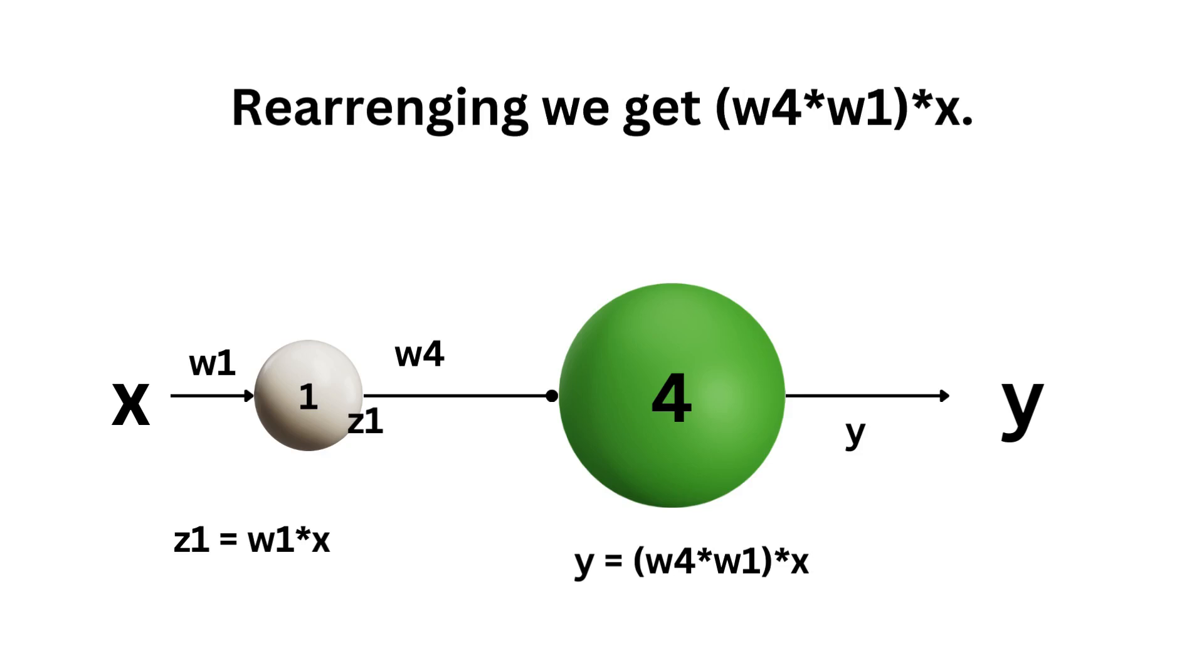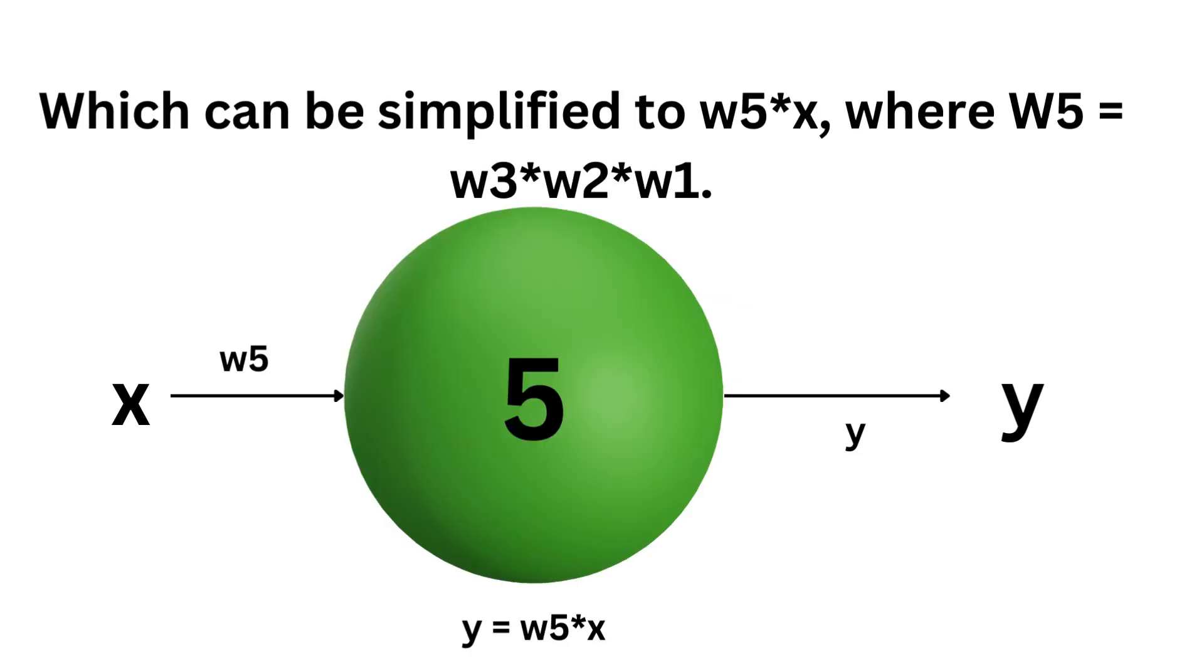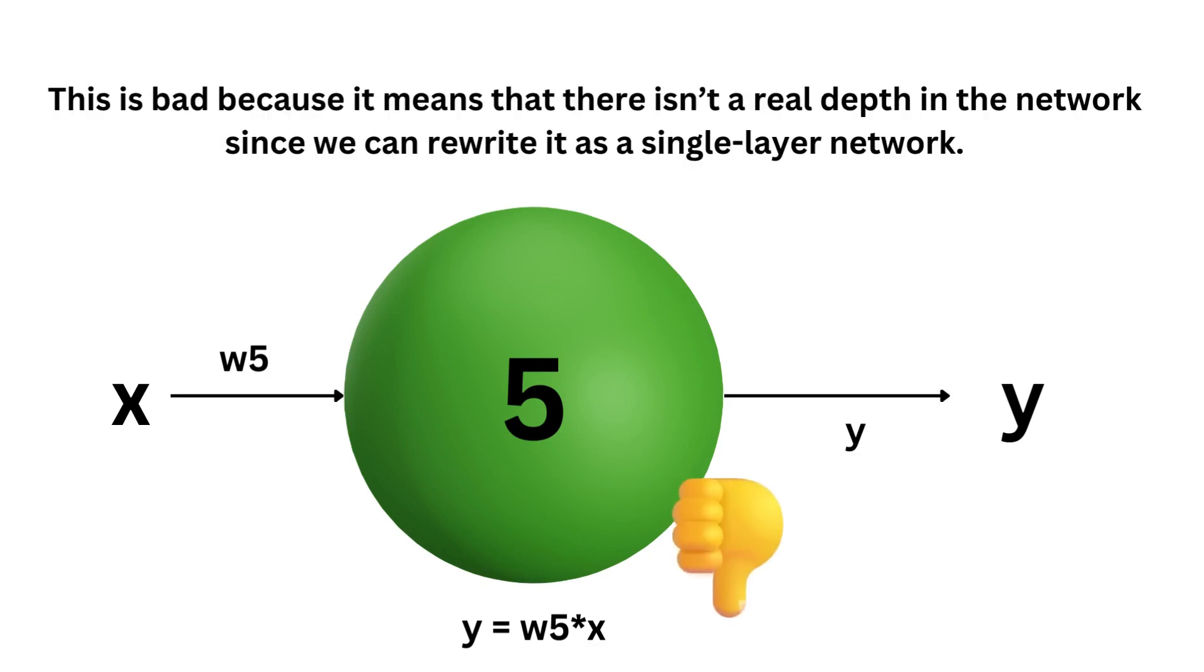And rearrange again the term, we get w4 times w1 times x, which can then be simplified to w5 times x, where w5 equals w3 times w2 times w1. And this is bad because it means that there isn't a real depth in the network since we can rewrite it as a single layer network.